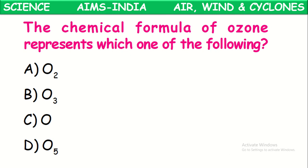What is the chemical formula of ozone? Ozone is one of the forms of the element oxygen. Its molecular formula is O3.